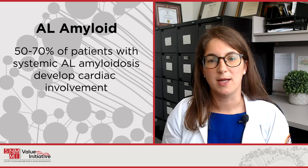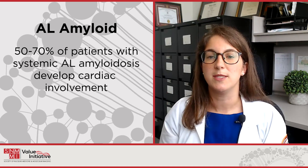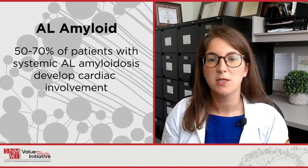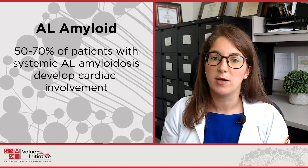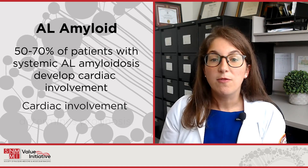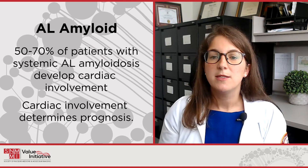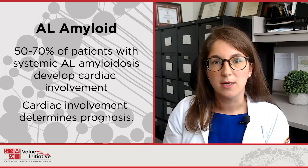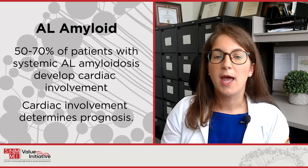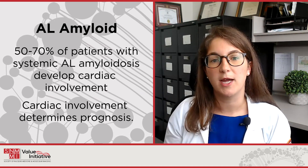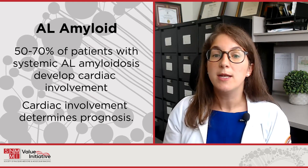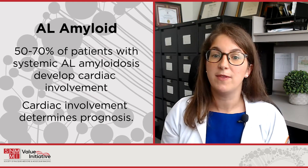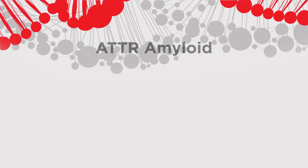Let's begin by talking about AL amyloid. We know that 50 to 70 percent of patients with systemic AL amyloidosis will develop some sort of cardiac involvement. In fact, disease prognosis can largely be determined by the degree of cardiac involvement, and patients who are diagnosed with AL amyloid need workup to identify if they do have a degree of cardiac involvement.